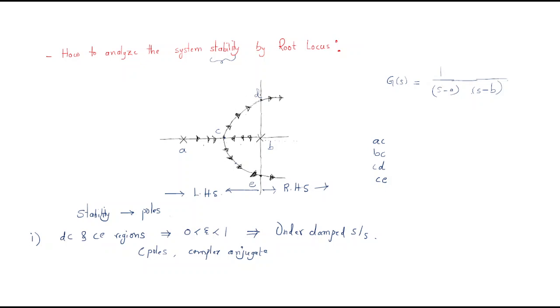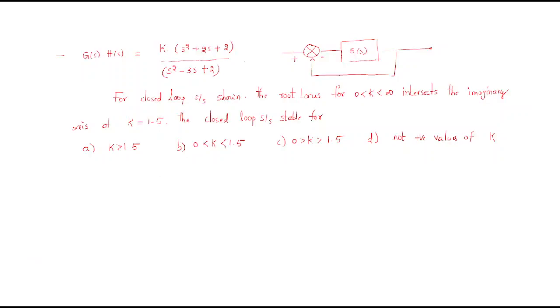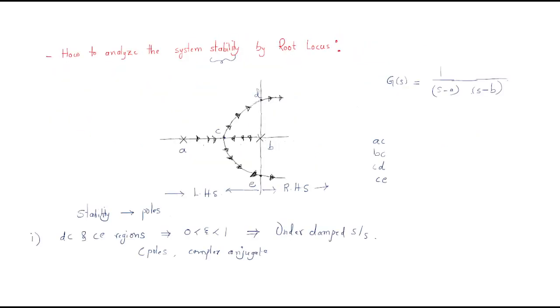This is the stability analysis by the root locus. We will discuss one example problem in the next session. The closed-loop poles decide the stability of the system.